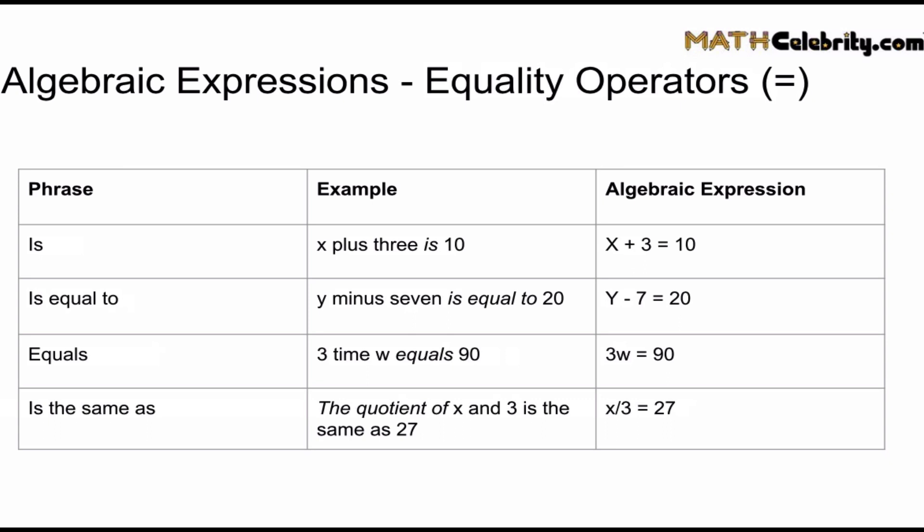Is equal to, once again, y minus seven is equal to twenty. We translate the algebraic expression and we know is equal to is setting it into the equal sign. Which means an equation. And if you look at the last two, we're doing the exact same thing. Equals is the same as. That denotes an equation. So always use the equal sign for those phrases.